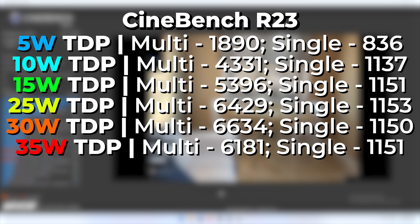This is not a universal thing for every chip out there — this is specific to the 5500U. Every chip has its ideal TDP to get the most performance per watt, its own sweet spot. And 25 watts seems to be about the most ideal for the 5500U. But let's see how TDP actually affects gaming performance.